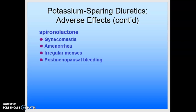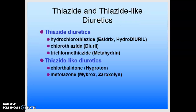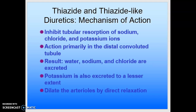Let's move on to the thiazide and thiazide-like diuretics, on the far right-hand side of your concept map. These include hydrochlorothiazide, chlorothiazide (Diuril), and trichlormethiazide (Metahydrin). The thiazide-like diuretics include chlorthalidone (Hygroton) and metolazone (Zaroxolyn or Mykrox). The thiazide diuretics, like hydrochlorothiazide, act on the distal convoluted tubules — they inhibit tubular reabsorption of sodium, chloride, and potassium ions in the distal convoluted tubule.